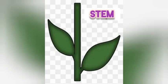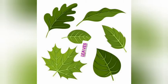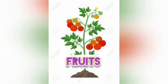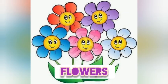What is this? It's a stem. Now this — this is a root. These are the leaves. And these are the fruits. Oh wow, what colourful flowers!